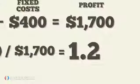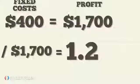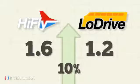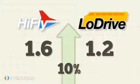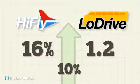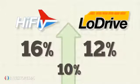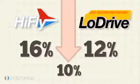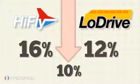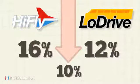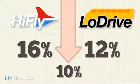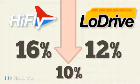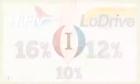Hi-Fly's operating leverage is higher than Low Drive's given their DOL. If both companies experience a 10% sales increase, Hi-Fly's profits will rise by 16% while Low Drive's profits increase by 12%. A 10% sales decrease for air and bus tickets will bring about a profit loss of 16% and 12% for Hi-Fly and Low Drive respectively. This example shows how operating leverage magnifies both profits and losses.